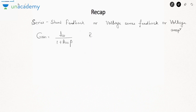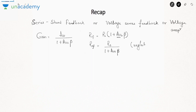The first configuration we covered was series-shunt feedback, also called voltage series feedback or voltage amplifier. The gain of the amplifier became Avs over 1 plus Avs·β. Due to series connection at the input, the input resistance increased by a factor of 1 plus Avl·β. Due to shunt connection at the output, the output resistance reduces by a factor of 1 plus Avs·β. While computing output resistance, ignore RL, and ignore RS.